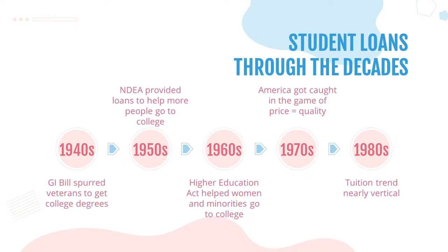In the 2000s, President George W. Bush passed the Higher Education Act, which created PLUS loans — allowing borrowers to borrow up to the whole cost of attendance. This set a huge precedent where colleges have no skin in the game; the government foots the bill every time, so they can keep increasing costs for borrowers.